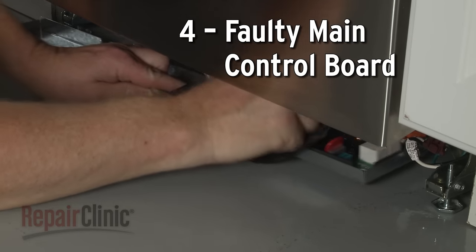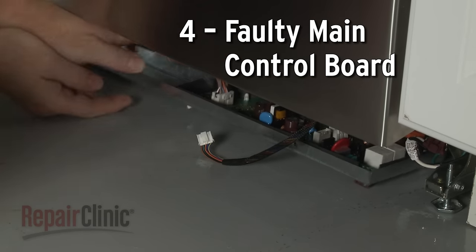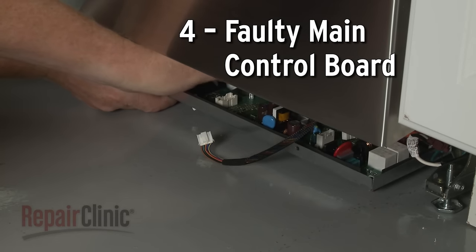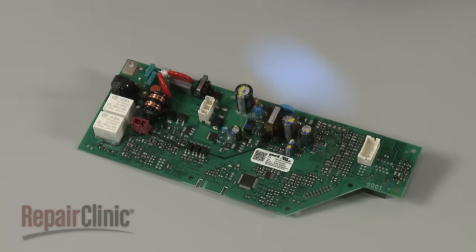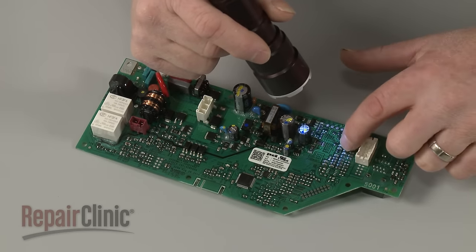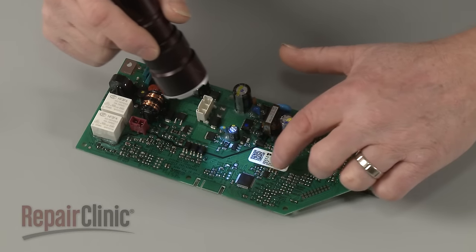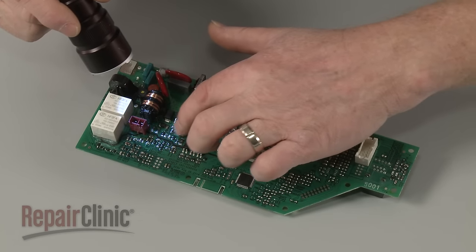The main control board provides power to nearly every dishwasher component. A faulty control board may prevent the dishwasher from starting. While the board cannot be easily tested, you can inspect it for signs of burning or a shorted-out component.